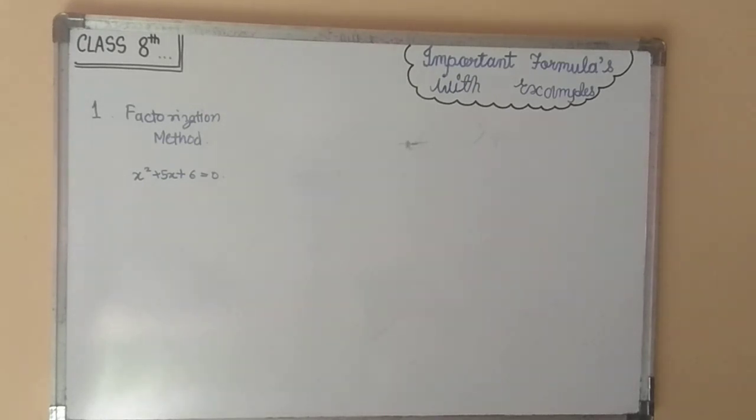In step 1, multiply the coefficient of x² (that is 1) with the constant term 6 and observe the sign of the product.